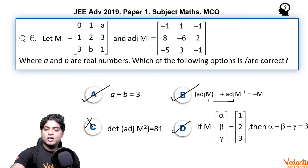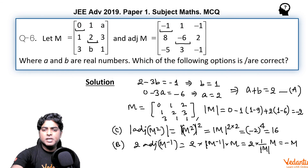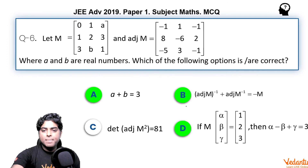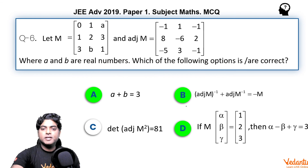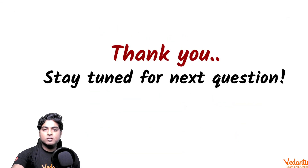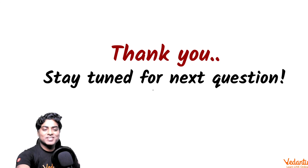So in summary, the correct options are A, B, and D. I hope you understood it — it required basic calculation to track option D. You can also go through the typed solution. Thank you, stay tuned for the next question.